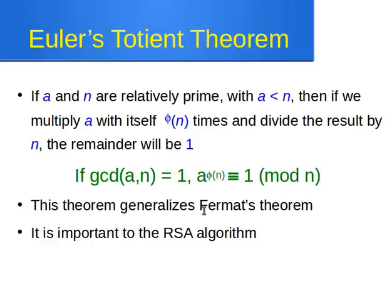Euler's theorem is actually a generalization of Fermat's little theorem — I have a video on that if you're not familiar with it. The theorem says: if we have two numbers a and n that are co-prime (i.e., GCD is 1) and a is less than n — for example, a = 5 and n = 6, since GCD(5, 6) = 1 and 5 < 6 — then if we multiply a by itself phi of n times and divide the result by n, the remainder will be 1.